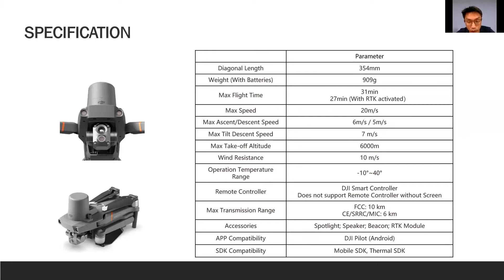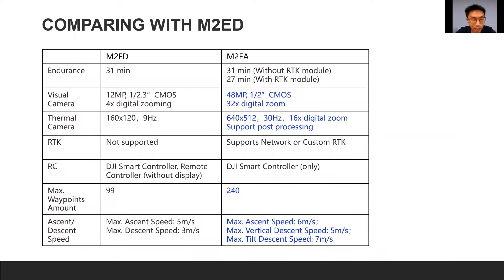The maximum transmission range in Singapore, following the CE standard, is 6 kilometers. Compared to the current M2ED, flight time is about the same but the camera is a very big difference — the M2ED has a 12 megapixel camera while the M2EA is 48 megapixel, with digital zoom up to 32 times. On thermal, the M2ED had an export restriction limiting Singapore to only 9 Hz, but the M2EA has no such restriction — it's 640 by 512 resolution at up to 30 frames per second, making it much better for tracking moving objects like cars and boats.